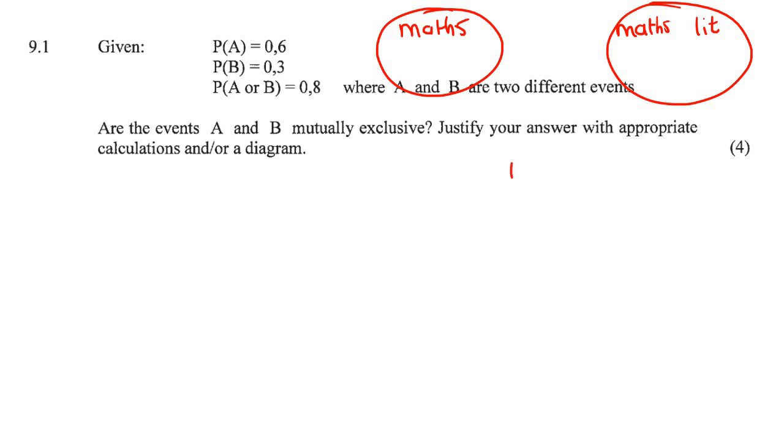Mathematically, what does it mean? It means that P of A and B equals zero. This is what mutually exclusive means.